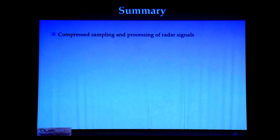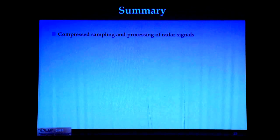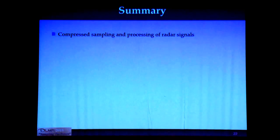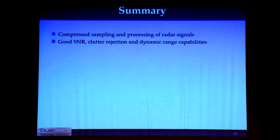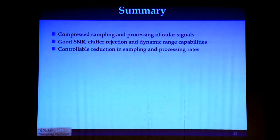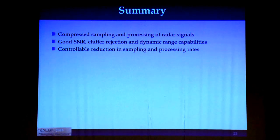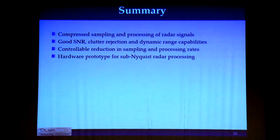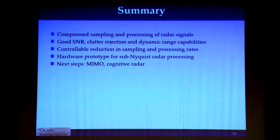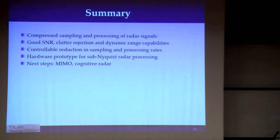To summarize, we've shown a compressed sampling and processing radar system that achieves good performance with noise, clutter, and target dynamic range. Perhaps the biggest advantage is that the sample rate reduction is adaptive — designers can control the trade-off between performance and system complexity and choose where they want to be on the performance curve. A hardware implementation has been built and will be demonstrated shortly.